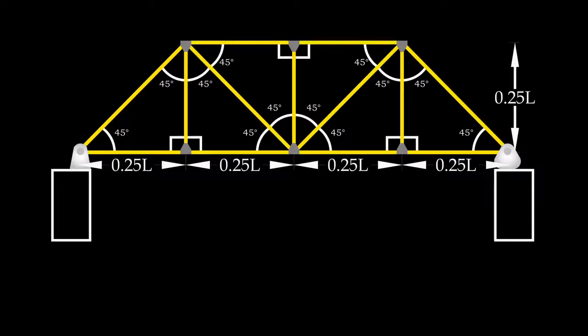Let's replace the beam with a four panel Warren truss. The base length is L and the spacing of adjacent bottom chord nodes is 0.25L. The inclination angle of diagonal members is 45 degrees, which means the height of truss equals to 0.25L.